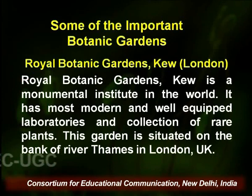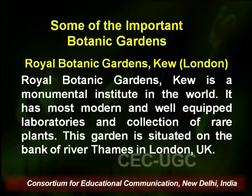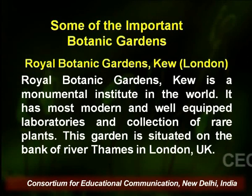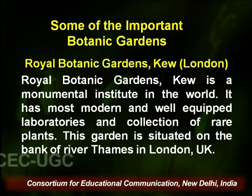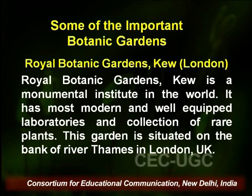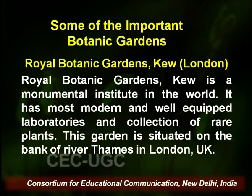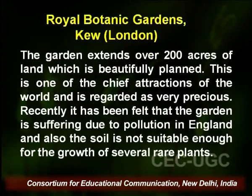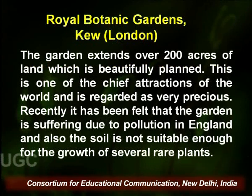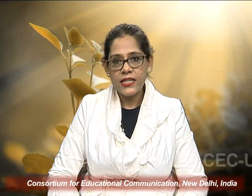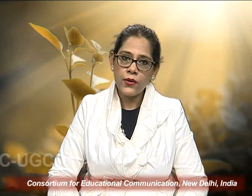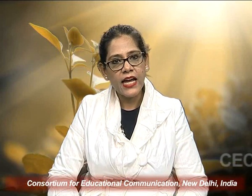Some examples of botanical gardens include, first, the Royal Botanic Garden, Kew, which I have already discussed. It is a monumental institution in the world, with the most modern and well-equipped laboratories and a collection of rare plants. This garden is situated on the bank of the River Thames in London, UK. The garden extends over 200 acres of beautifully planned land and is regarded as one of the chief attractions of the world. Recently it has been felt that the garden is suffering due to pollution in England, and also that the soil is not suitable enough for the growth of several rare plants.